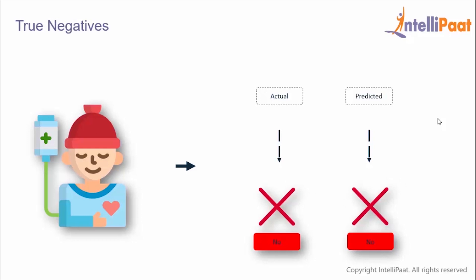Next we have true negatives. These are the cases in which the actual value is false and the predicted value is also false — the patient doesn't have cancer and the model also predicted that the patient doesn't have cancer.